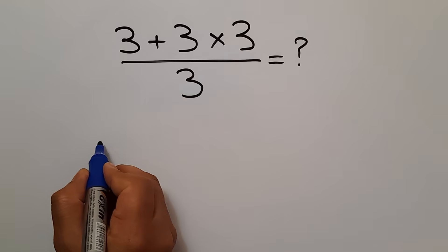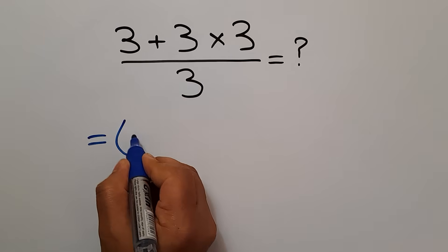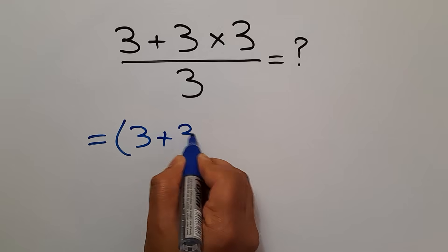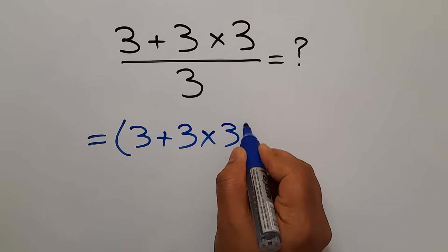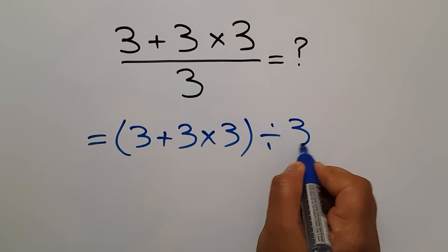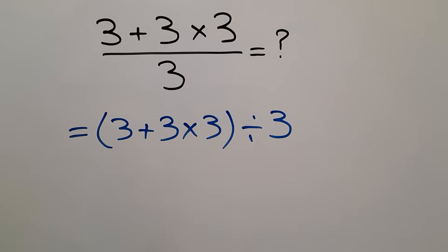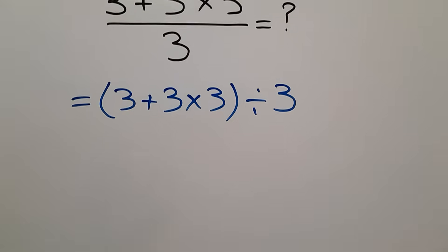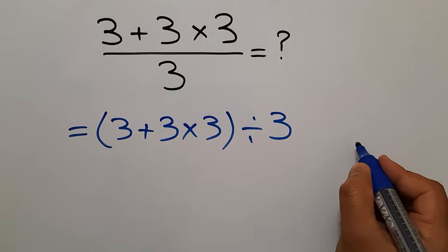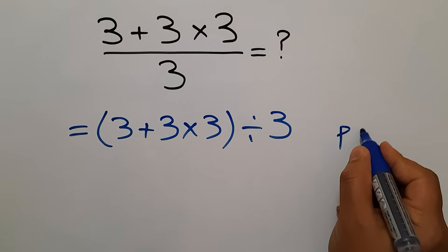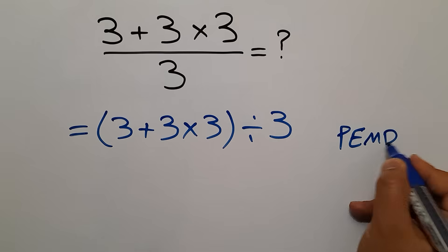So our fraction can be written as 3 plus 3 times 3 then divided by 3. And here according to the order of operations, which is PEMDAS.